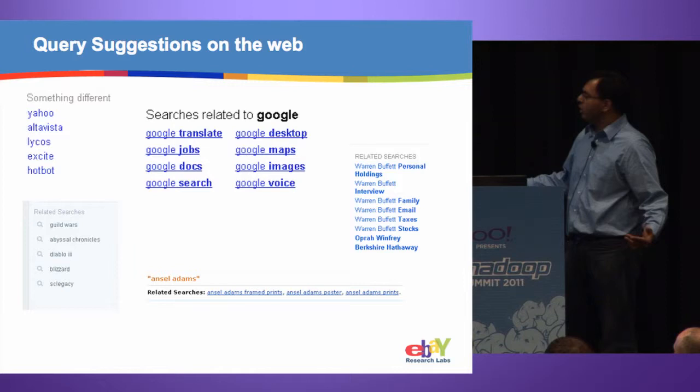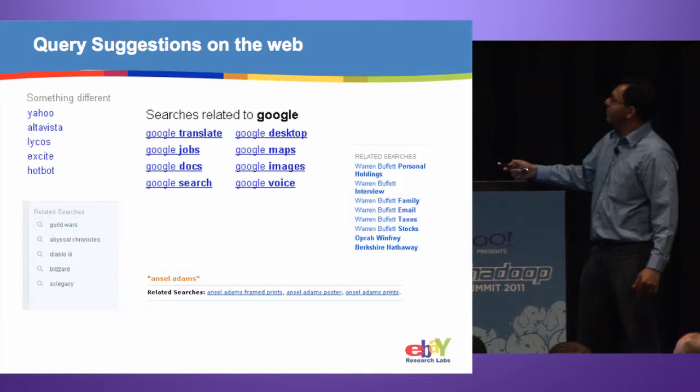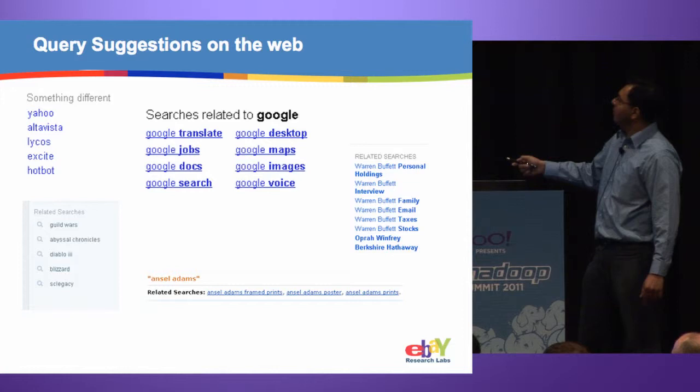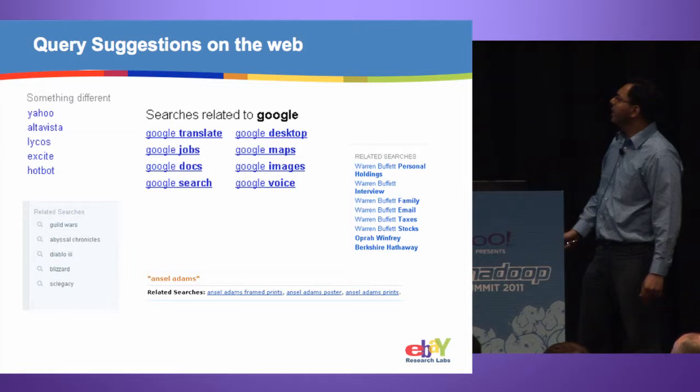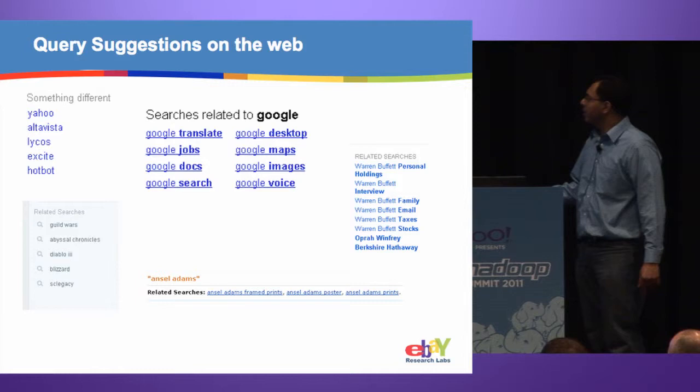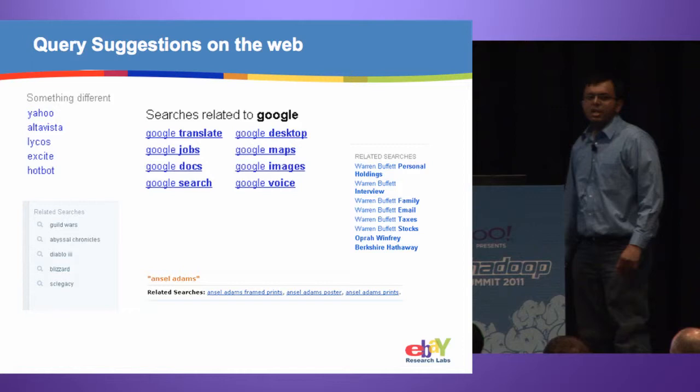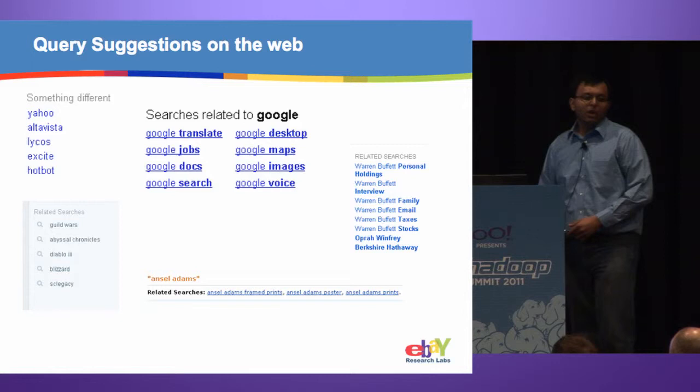I was surprised to see old search engines but no Bing.com there — and this example is from yesterday, so it's fresh data. There are also examples from Bing.com when you search for Warren Buffett, and from Yahoo when you search for a popular video game. This does not exist only for web search — here is an example from Amazon.com where a user looks for Ansel Adams, and Amazon provides options to focus the search toward posters or prints.